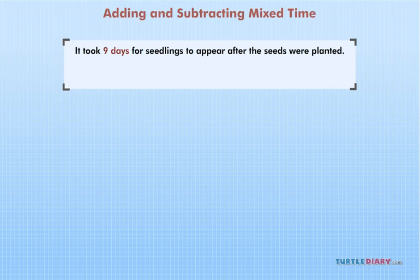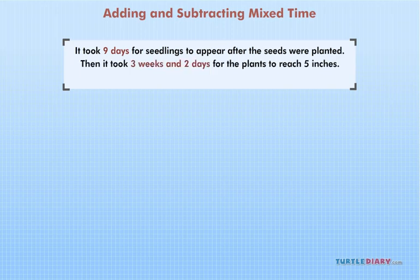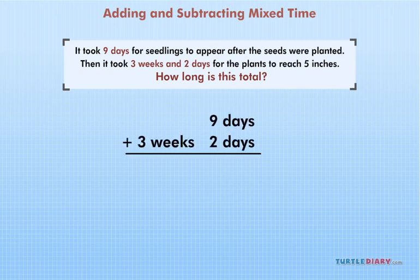It took 9 days for seedlings to appear after the seeds were planted. Then it took 3 weeks and 2 days for the plants to reach 5 inches. How long is this total? We must first write this as an addition problem, lining up the weeks and the days.